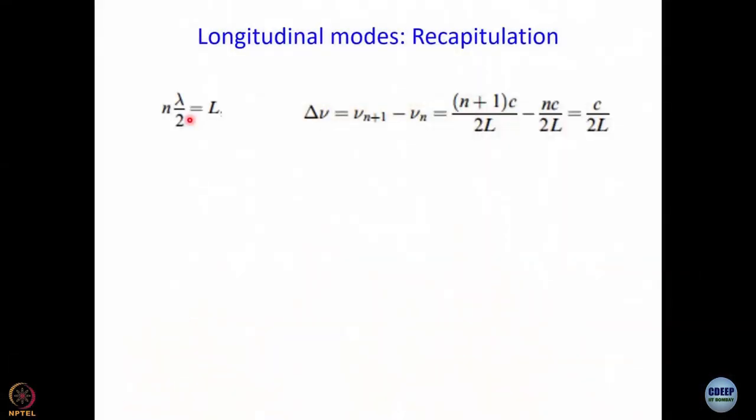Secondly, we have worked out the expression for delta nu, where delta nu is the difference in frequencies of two successive modes. Mode number n and mode number n plus 1, and that turned out to be C divided by 2L. And C divided by 2L is actually an interesting quantity.